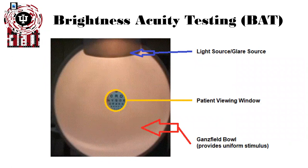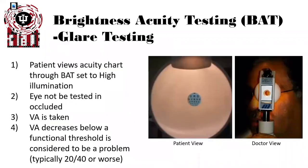This is the patient's inside view of that same BAT. There are three main features to this inside spot. First, there's a light source or glare source that is uniformly projected onto the actual background. This background is a Gansfield bowl, and that way it provides a universal stimulus to the entire visual field at equal photo distances across that field. Finally, there's an actual viewing window inside where the patient can view a visual acuity chart to see how much it affects their vision.